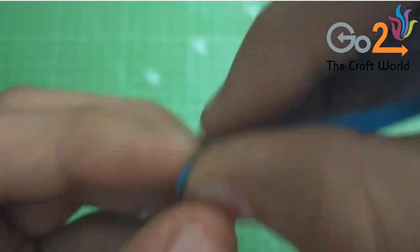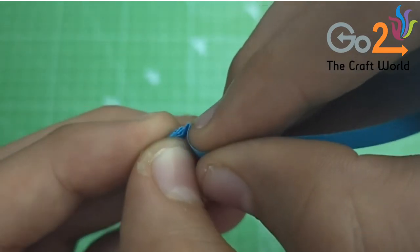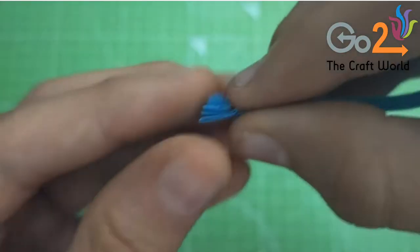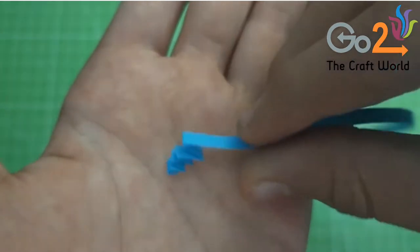For the increasing zigzag, you have to take a very small part of strip as shown before and you have to increase little by little like this to complete the increasing one.